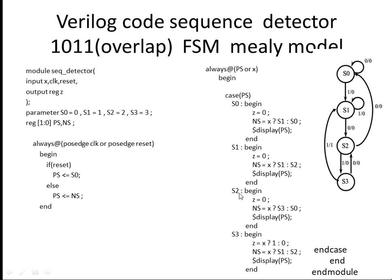Similarly, S2. When in S2: output Z is 0. What will be the next state? If X is 1, you are moving to S3. If X is 0, you are moving to S1. A display statement shows the present state.